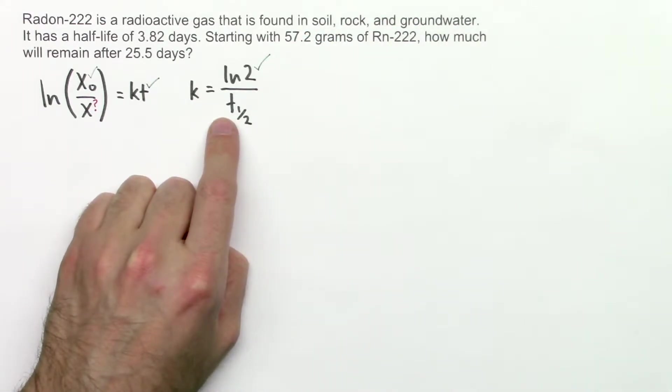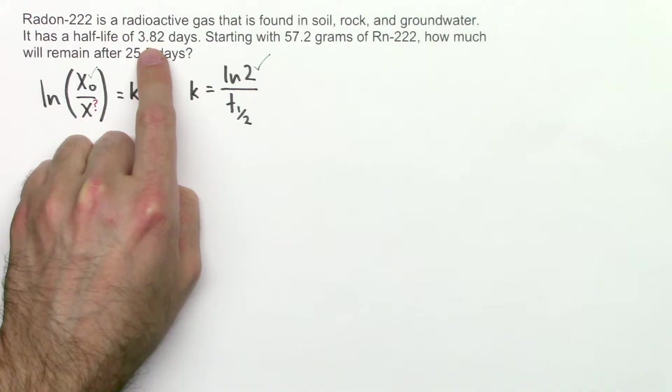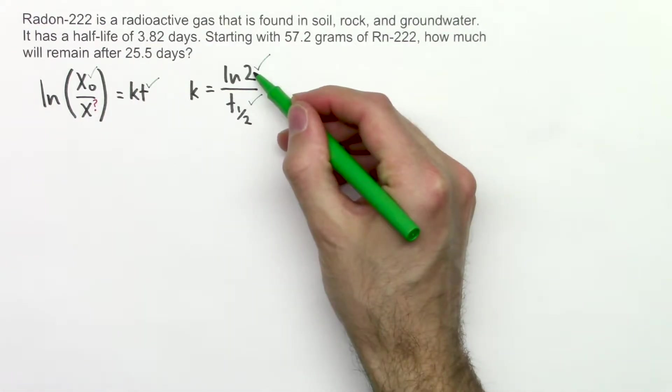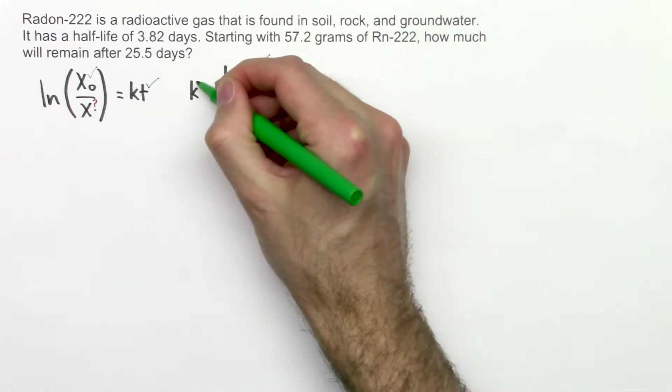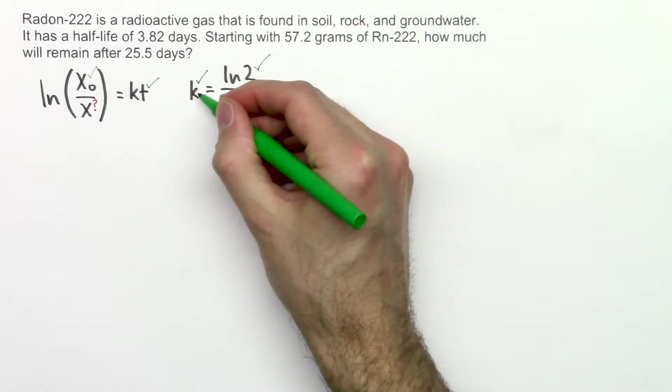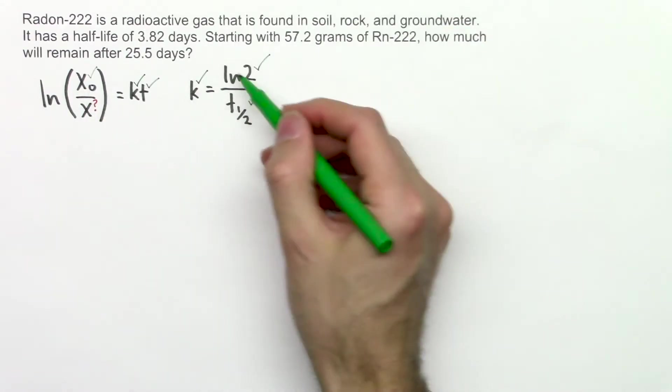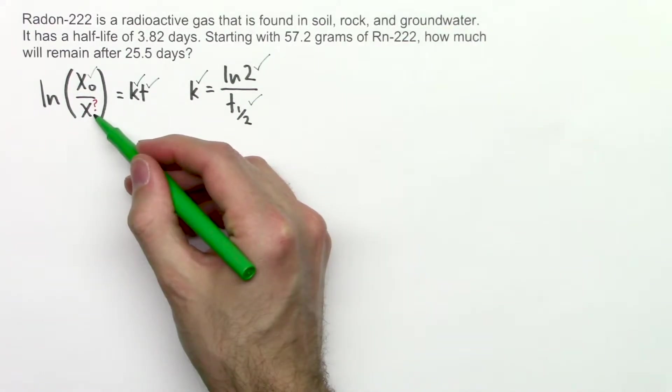And then t1 half, that's the half-life. That's given, so we know that. Since we know this and we know this, we can calculate k. And we can then take k and plug it into that equation. So these are what we know and this is what we're solving for.